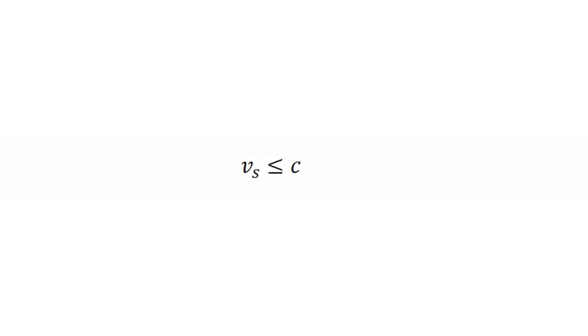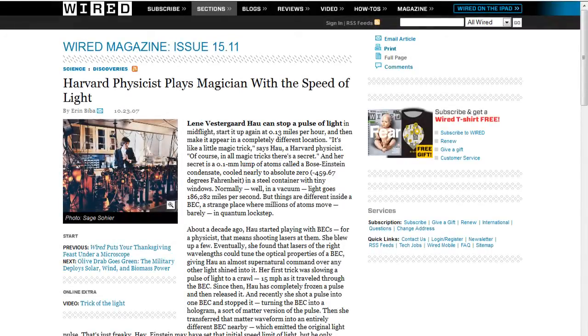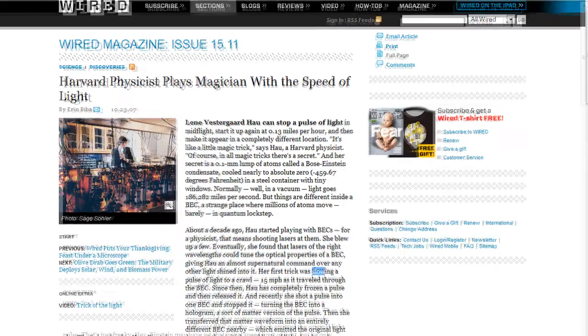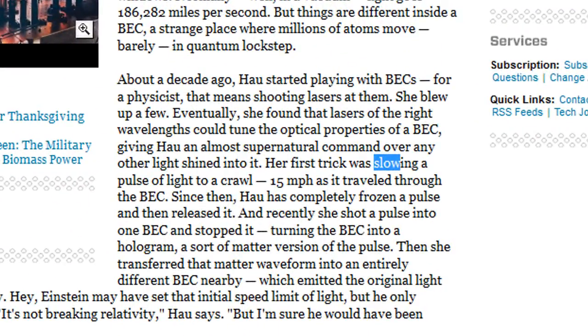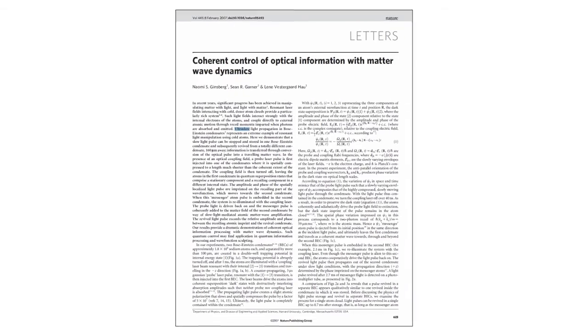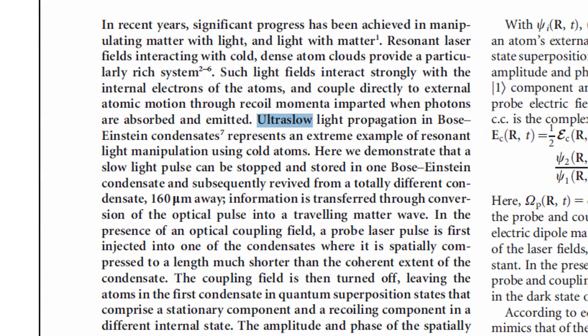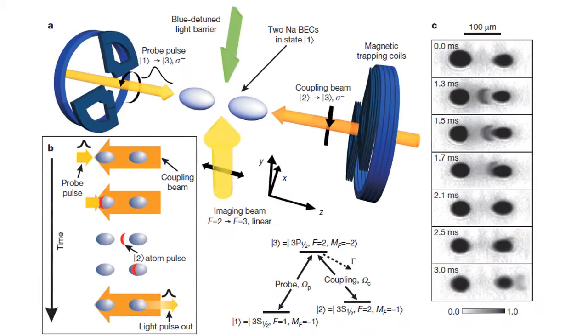If Sean had chosen an article reporting an observed increase in phase or group velocity beyond C, his mistake would have been understandable. But instead, he chose one that only involved light with a slow group velocity. Ultra-slow light, at that. With a conversion to a yet slower matter wave, no less.